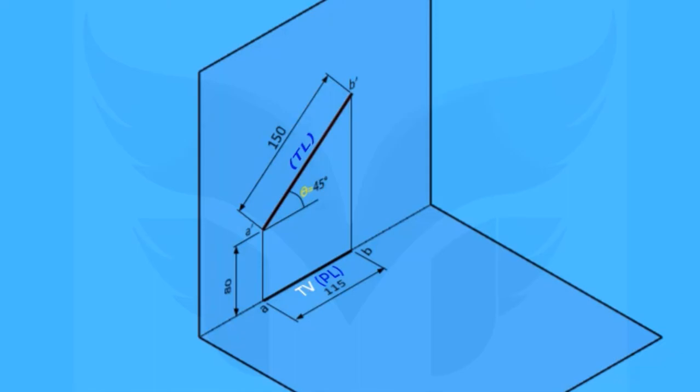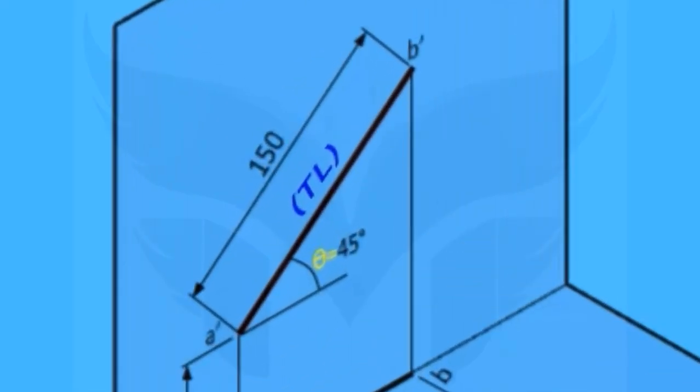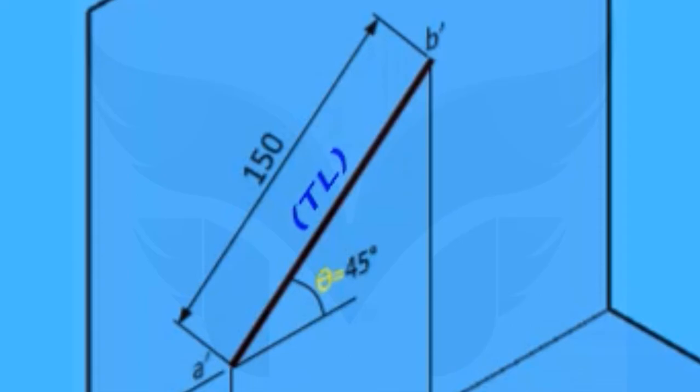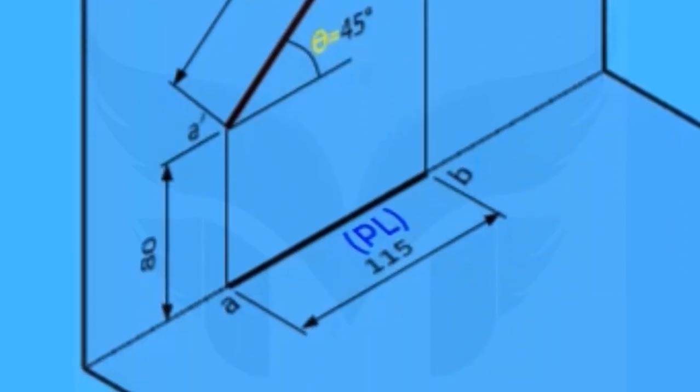So in this case, we are introduced to two new terms. First, angle theta, which is the notation to show inclination of a true length with the HP. Second, the plan length, which always appears in the top view on the HP. Don't worry, you will get used to this terminology soon.